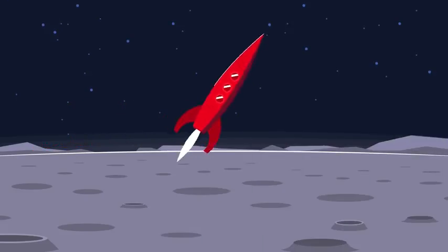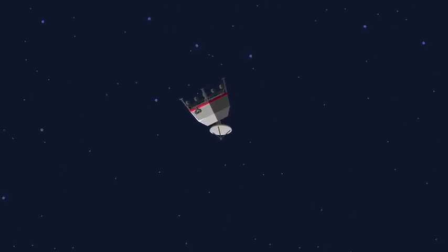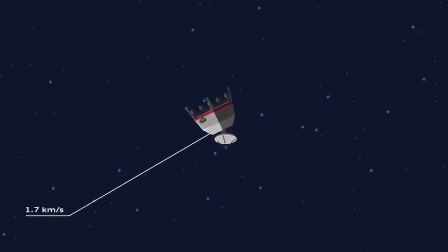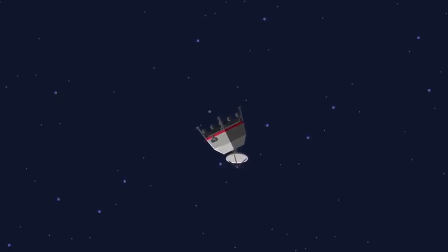In science fiction films, landers simply descend to the lunar surface. But in reality, the lander is still orbiting the moon at a speed of 1.7 kilometers a second until the final landing sequence is initiated.